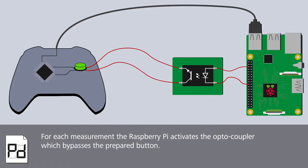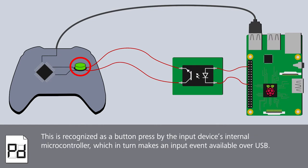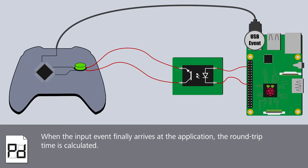For each measurement, the Raspberry Pi activates the optocoupler, which bypasses the prepared button. This is recognized as a button press by the input device's internal microcontroller, which in turn makes an input event available over USB. When the input event finally arrives at the application, the round-trip time is calculated.